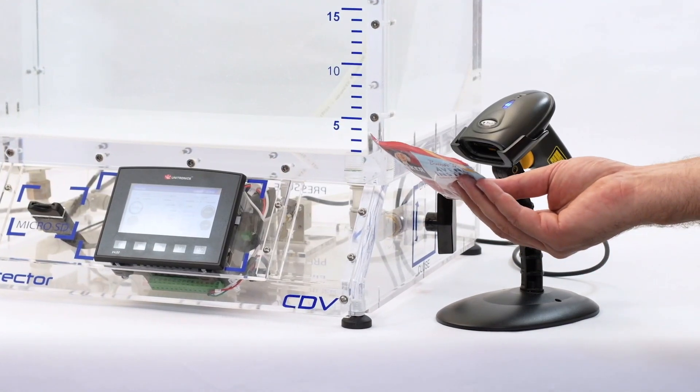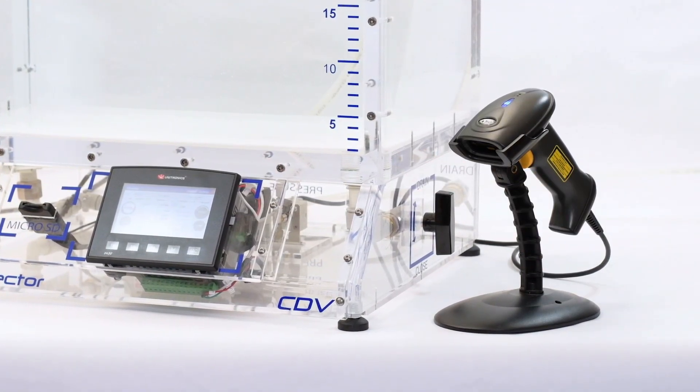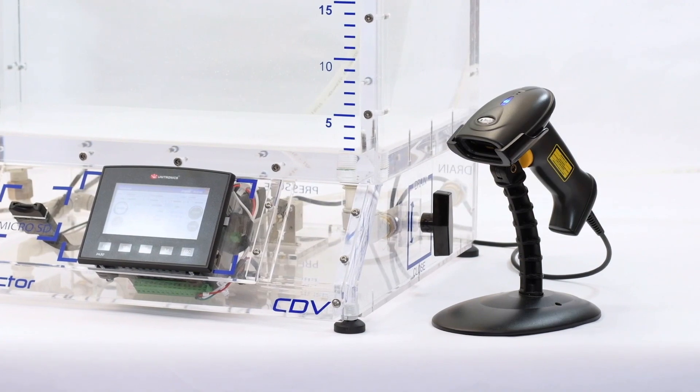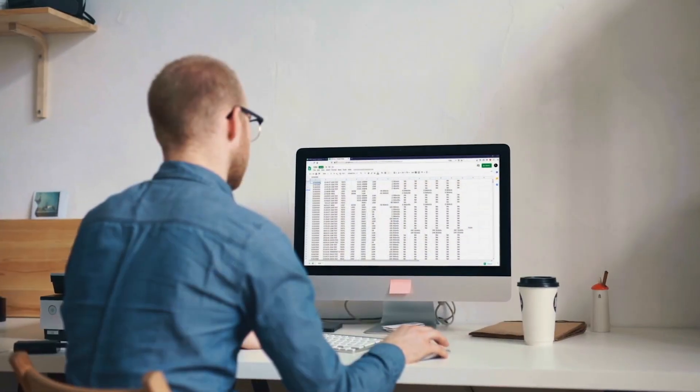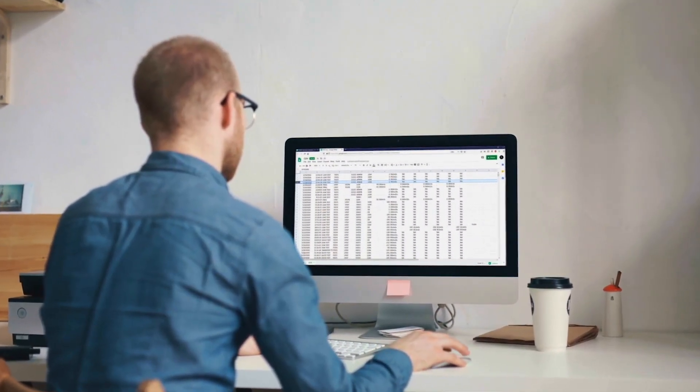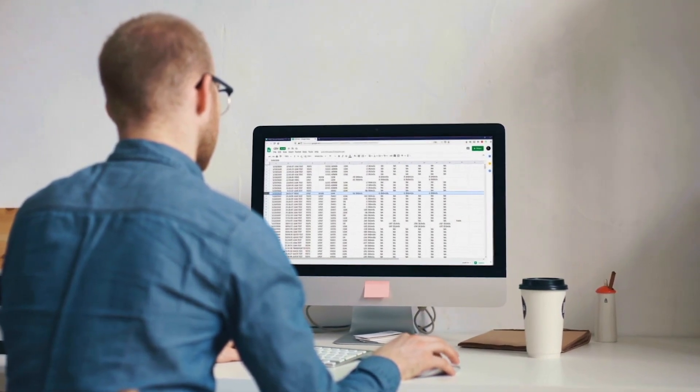You can automate the selection of the recipe using a barcode scanner. At the end of each test, Orion will store the results in a spreadsheet and file them directly into the SD card.